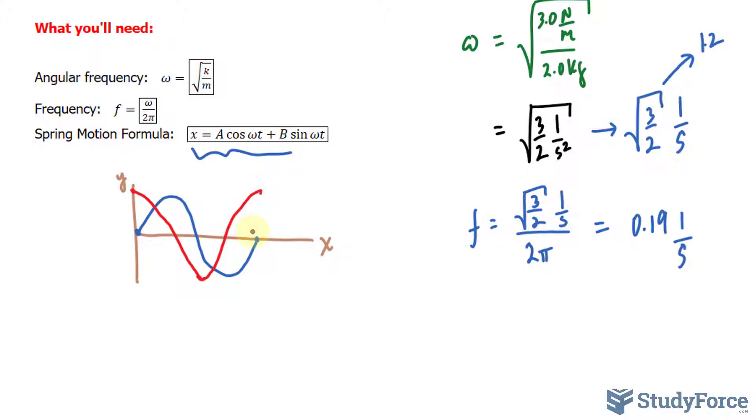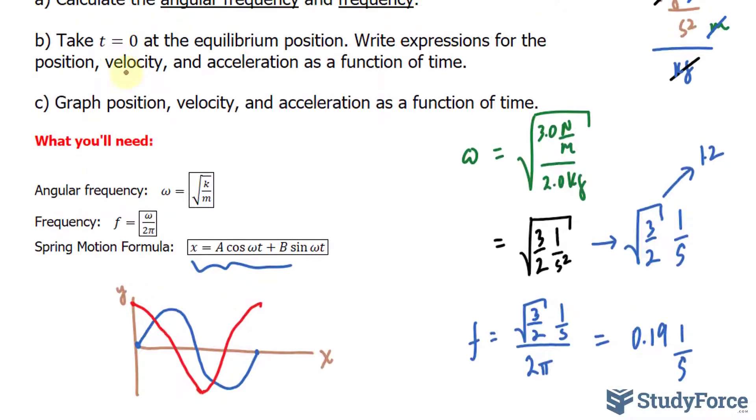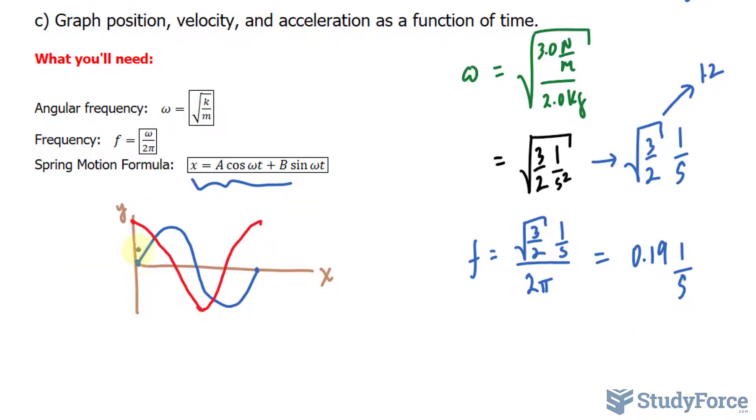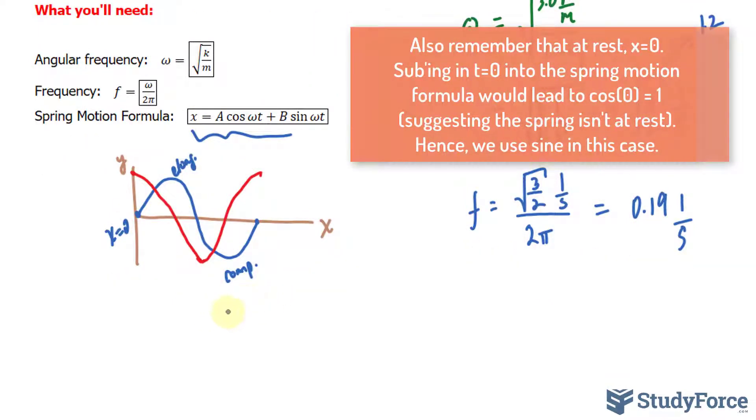Of these two, the one that works best for us in this situation, given that when t equals 0 it's at equilibrium, the blue one works best, because when t equals 0, or when x equals 0 in this case, it is neither elongated or compressed. So we have to use sine instead of cosine to write this as a function.